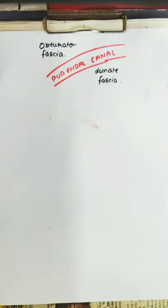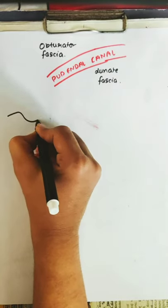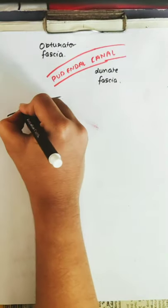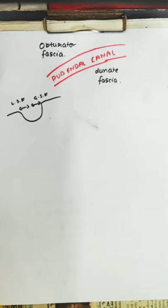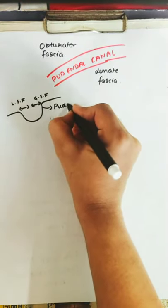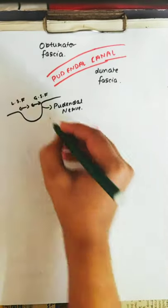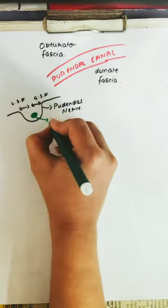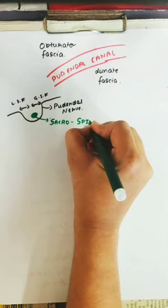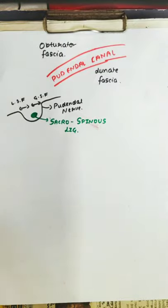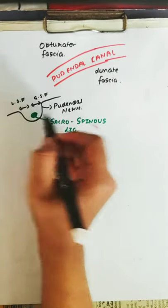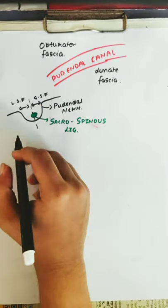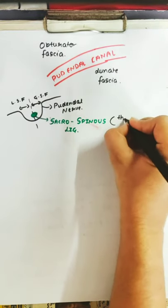Before that, I'll show a small diagrammatic representation. If this is the pudendal canal, and the lesser sciatic foramen and greater sciatic foramen are present here, then this is the pudendal nerve with the sacrospinous ligament formed here. The sacrospinous ligament converts these notches into foramina. What are the lesser and greater sciatic foramina? They look like a notch, but the sacrospinous ligament is the one which converts these notches into the lesser and greater sciatic foramina.